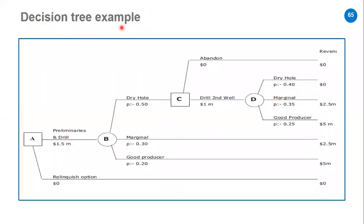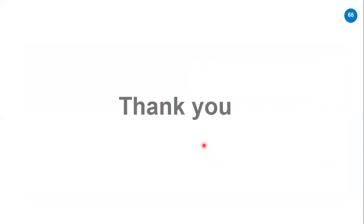The fourth method is a decision tree. In each phase we put the probability of each outcome — for example, if we drill a well, there is some probability it could be a dry hole, a marginal producer, or a good producer. We assign each probability and multiply through to get the expected value. These are the methods we use for risk handling. Thank you for attending and I hope you will benefit from this presentation.